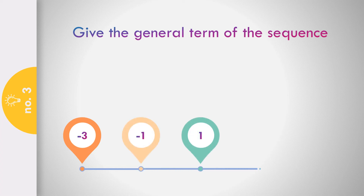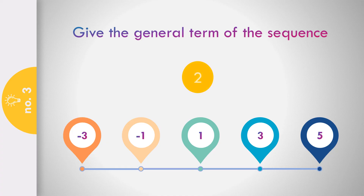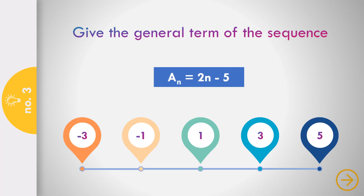Exercise number 3: In the sequence negative 3, negative 1, 1, 3, and 5 — the answer is a sub n equals 2n minus 5.